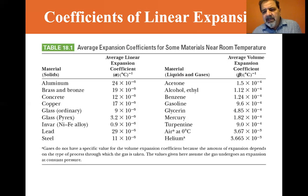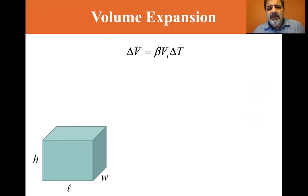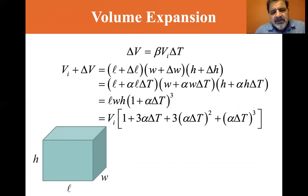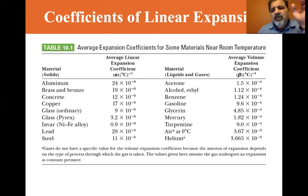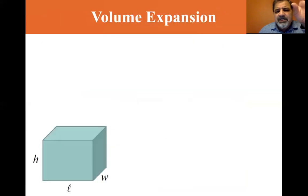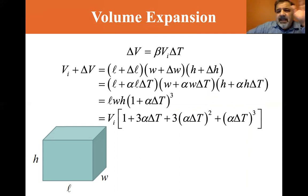For volume expansion, delta-V equals beta times V-initial times delta-T. We're going to apply the linear expansion in all three dimensions. So V-initial plus delta-V equals the length plus the increase in length, times the width plus the increase in width, times the height plus the increase in height. Using delta-L equals alpha times L-initial times delta-T for all dimensions: